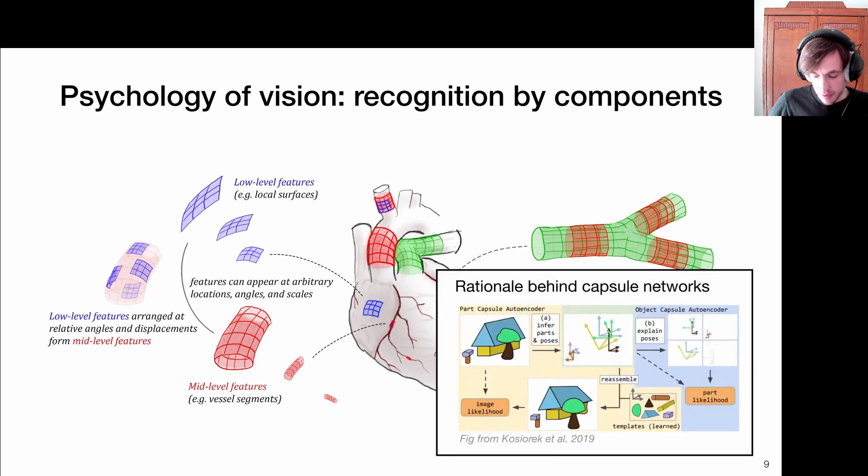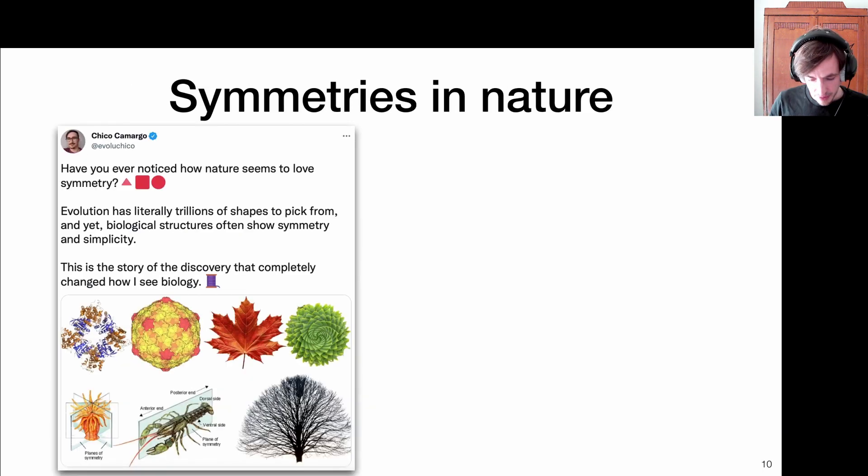Now, worth mentioning here is that this recognition by components viewpoint, that's also the rationale behind capsule networks. The idea is to learn representations that represent objects which are made up of lower level parts. And I think that's a very interesting and related line of research in neural networks. There are actually some interesting papers that quite explicitly connect capsule networks to group theory.